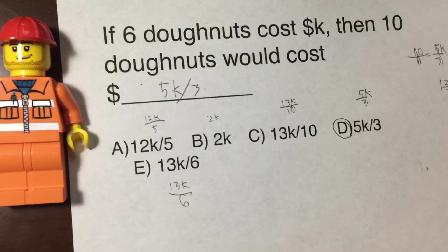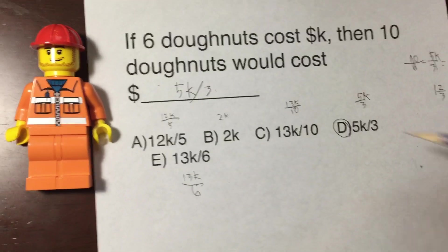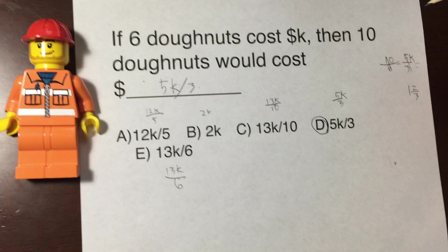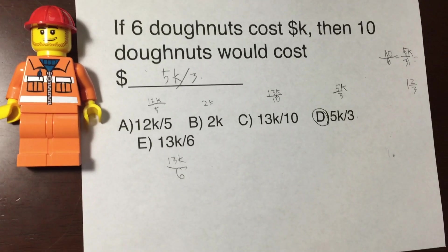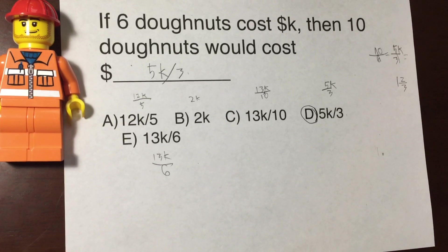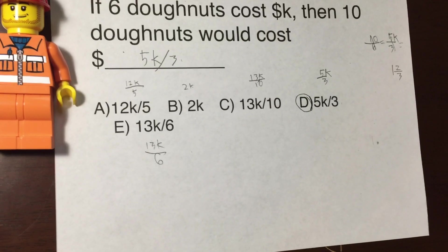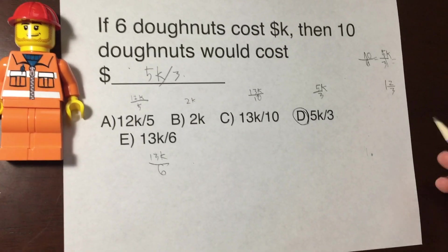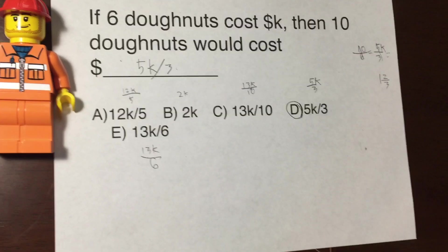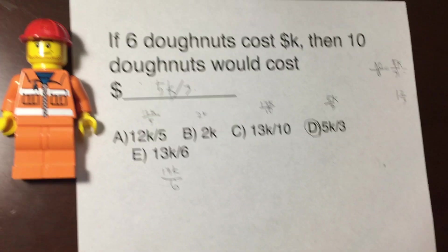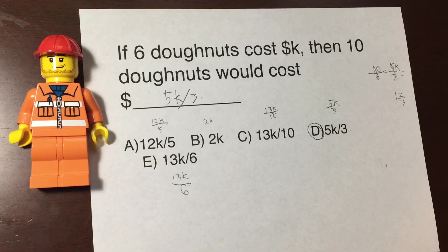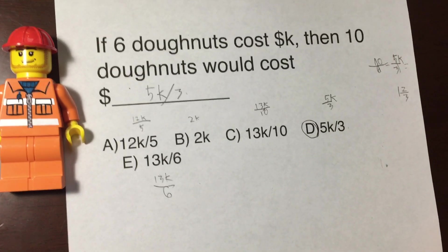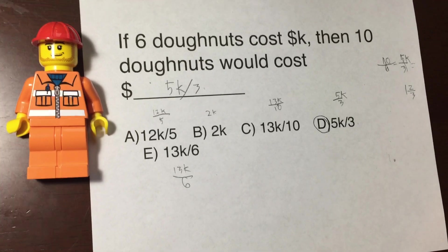Play around with this question. Instead of doing six donuts cost k, you could do like five donuts cost half k, and then 13 donuts would cost blank dollars and stuff like that. You could play around with this. I did it a little bit too and it was really fun for me.